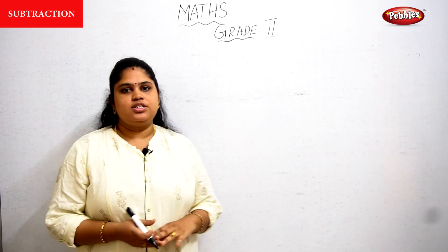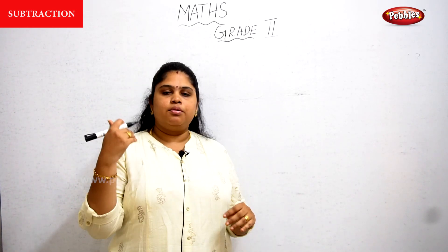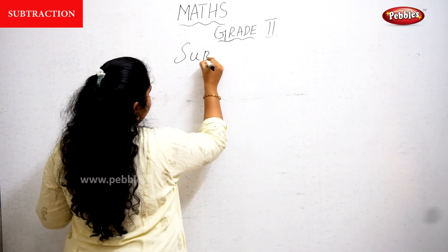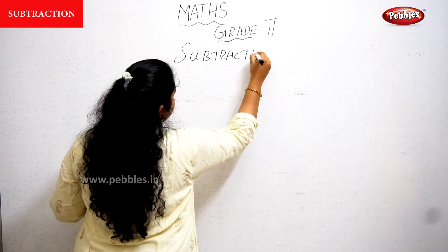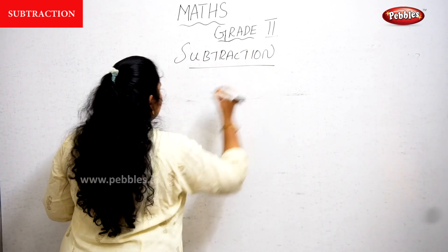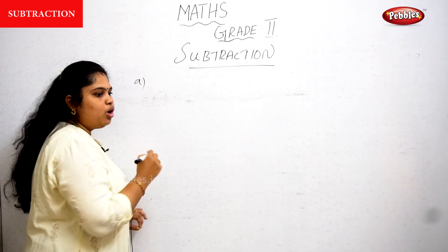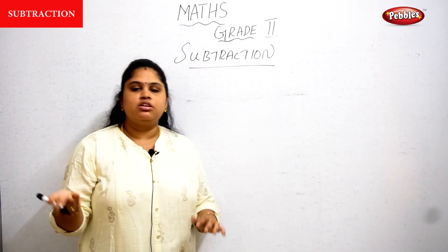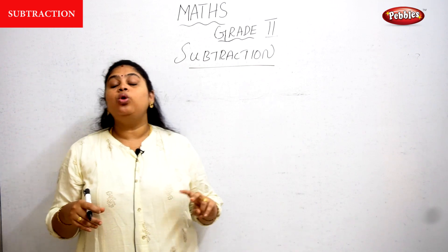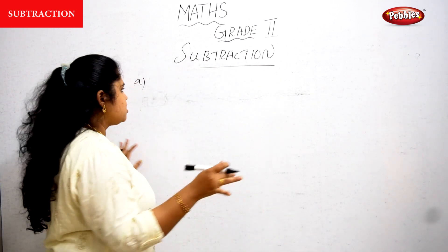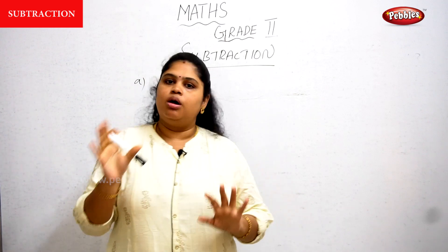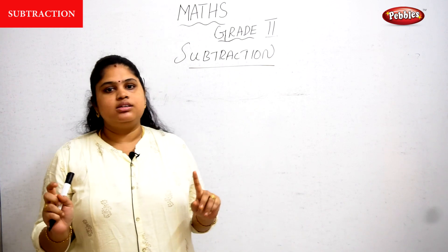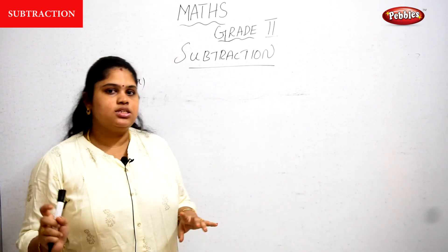We have seen the difference between addition and subtraction. Now let's do more examples in subtraction. We already seen single digit subtraction like 5 minus 2, 8 minus 2. Now we are going to perform two-digit subtraction. We will start from a very small number — one two-digit and one single-digit.